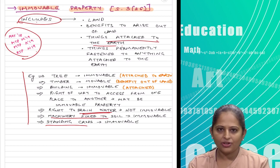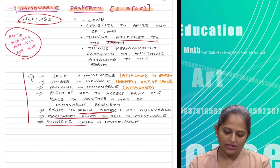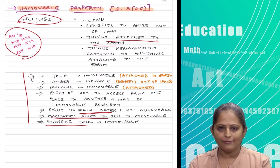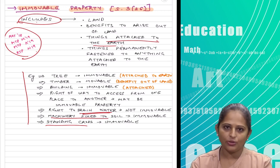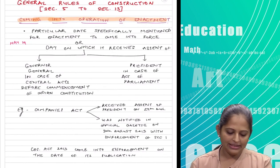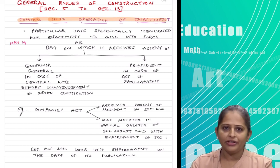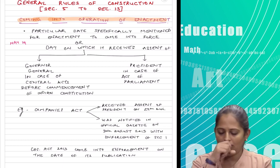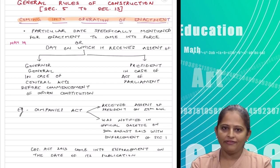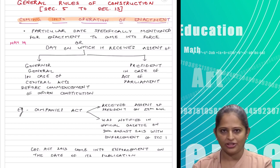Whatever is not immovable property is movable property — that is the definition of movable property. If you are asked a question worth 4-5 marks on movable property, you should always give the definition of immovable property as well. These definitions used in any other act will derive their meaning from the General Clauses Act if not defined specifically in that act. However, if a particular act defines a word already defined in the General Clauses Act, you always refer to the definition in that particular act.